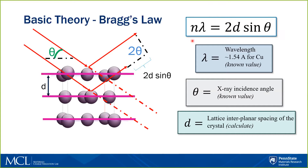It's a simple equation that says n lambda equals 2d sine theta, where n will be assumed to be 1, and lambda is what we call the wavelength. In this example, we'll be making the assumption that we're using a copper X-ray tube, so we know that our wavelength is approximately 1.5 angstroms. Theta is what we call the incidence angle, shown here in green.